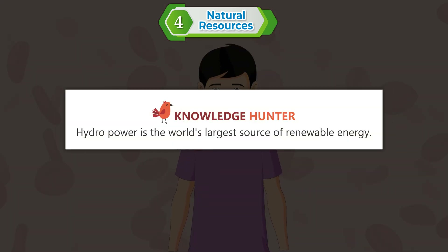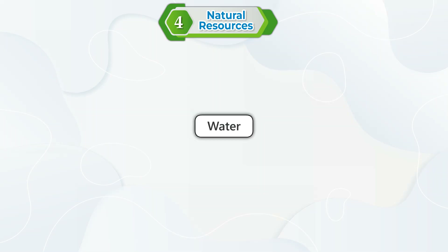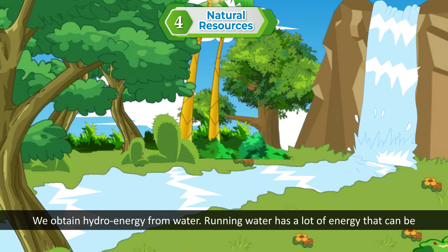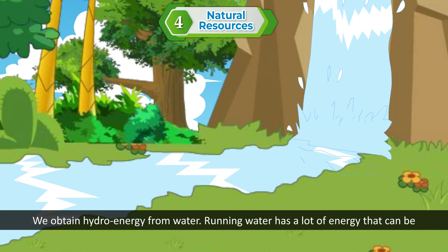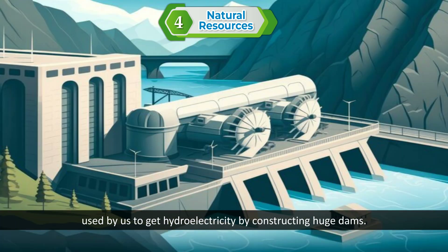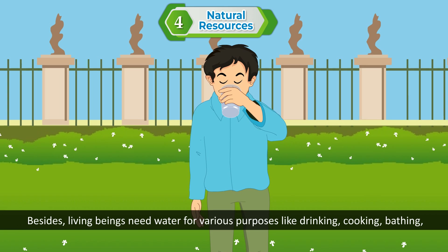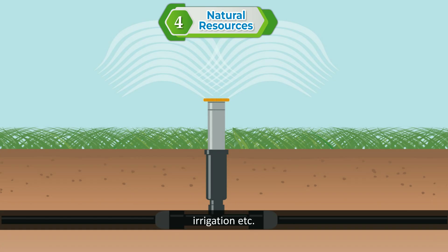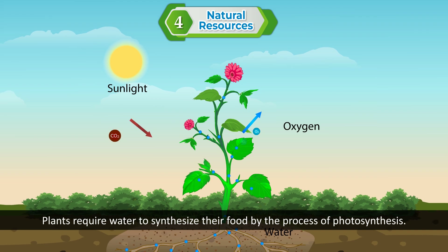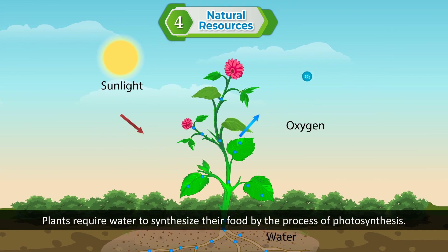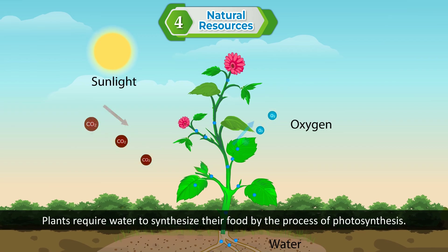Knowledge Hunter: Hydro power is the world's largest source of renewable energy. Water — we obtain hydro energy from water. Running water has a lot of energy that can be used to get hydroelectricity by constructing huge dams. Besides, living beings need water for various purposes like drinking, cooking, bathing, irrigation, etc. Plants require water to synthesize their food by the process of photosynthesis.